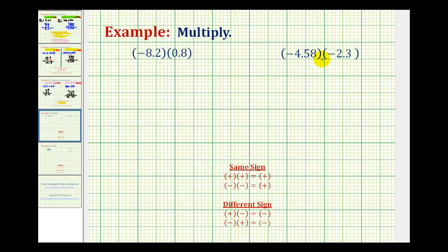To multiply signed decimals, we'll first determine the sign of the product, and then we'll multiply.